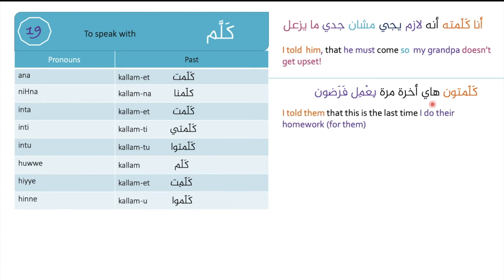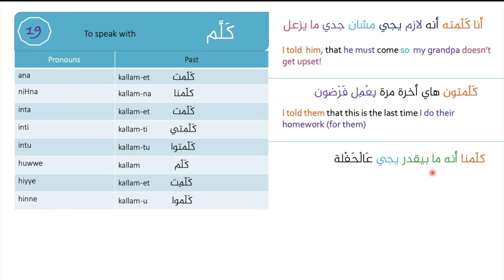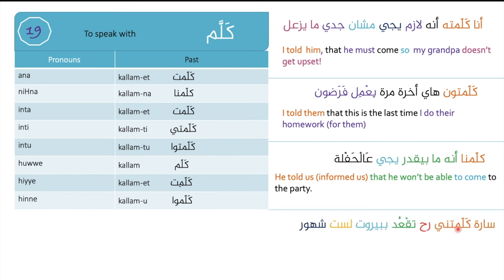Another example: kallamna inno ma biyqdar yiji 'al-hafle — we told him he can't come to the party. And: Sara kallamatni raha tqu'ud bi Beirut lest shuhur — Sara told me she will stay in Beirut for six months.